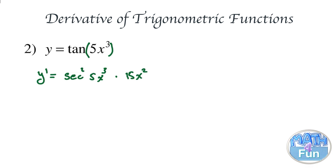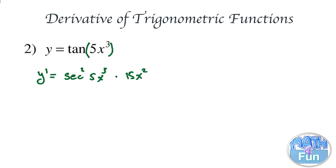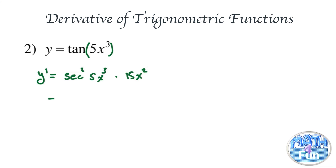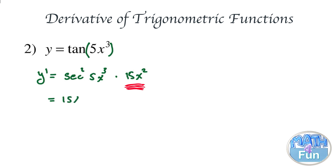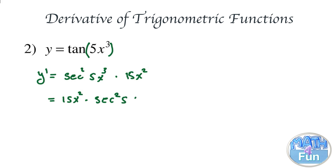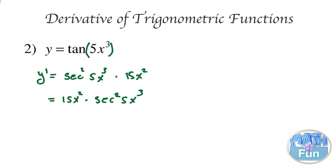We drop down the 3, multiply it by 5, and take away 1 from the power 3, so it becomes 2. Written in proper form, it is equal to 15x squared multiplied by secant squared of 5x cubed.